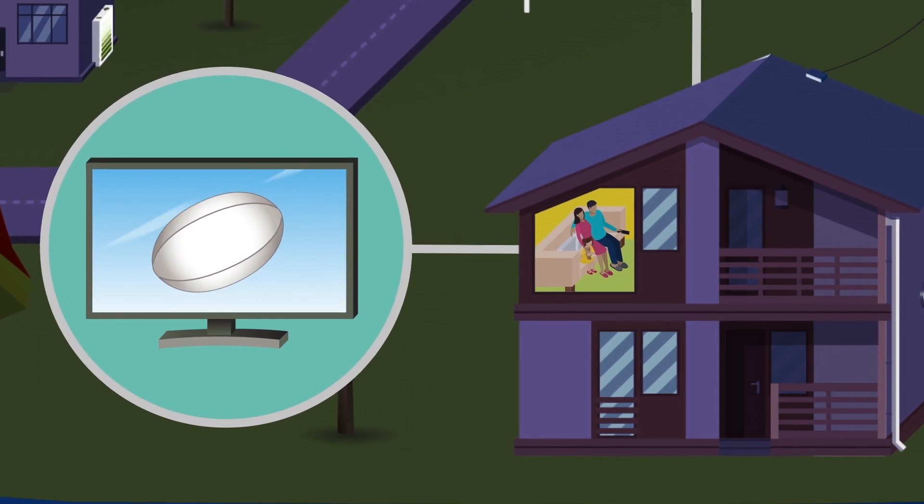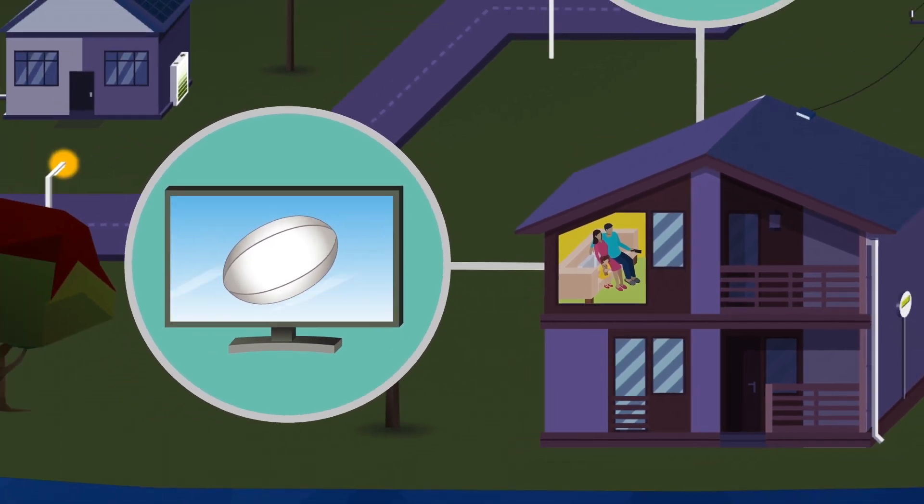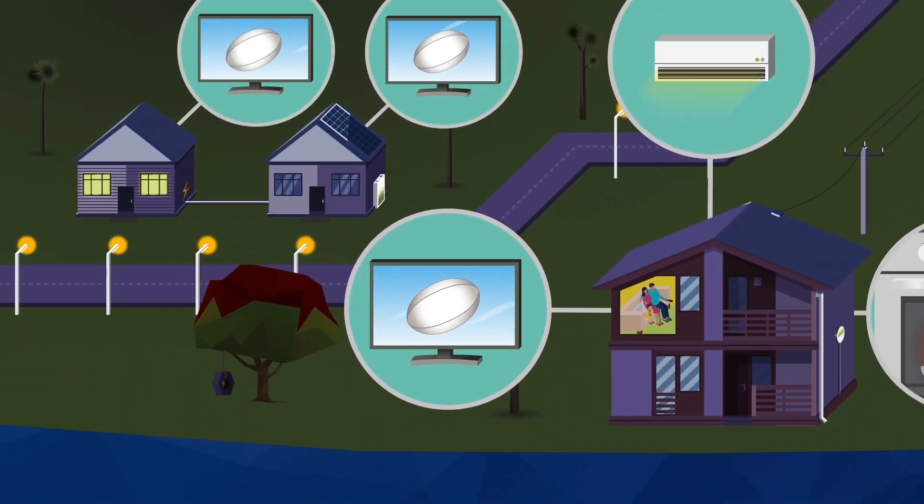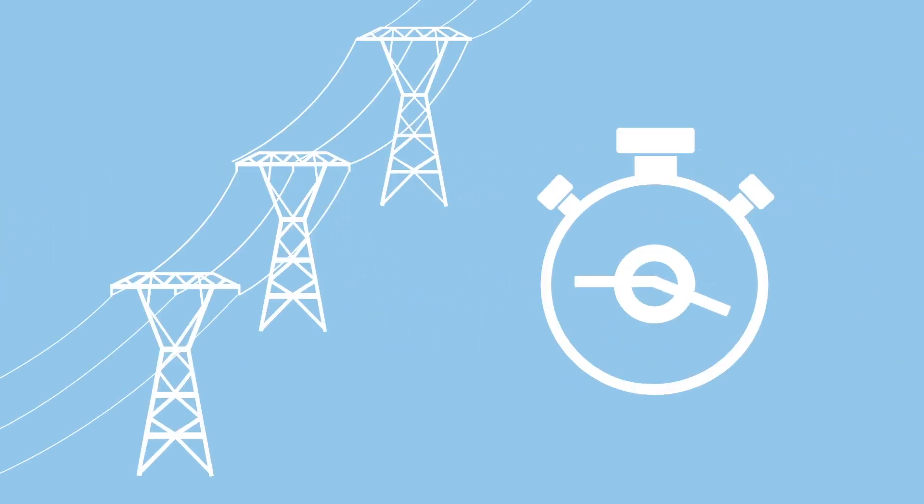But how do we know the system can handle everyone watching the game at the same time? Lots of ways. Companies have to follow rules and carefully manage risk to keep the power flowing. Then there's Trans Power. Who? You know, they run the national grid and they're in charge of the minute by minute running of the wholesale market. I see.